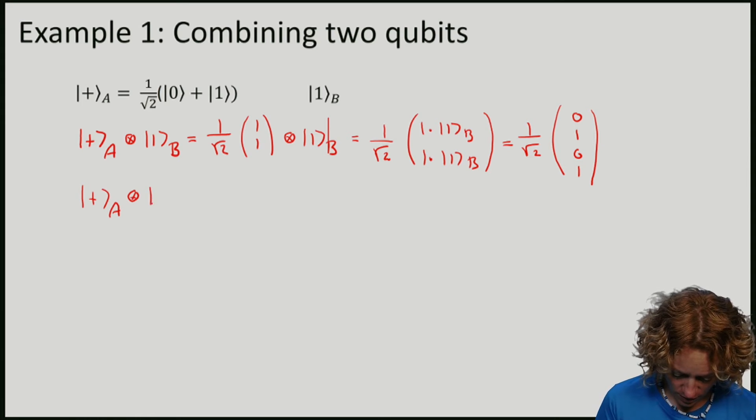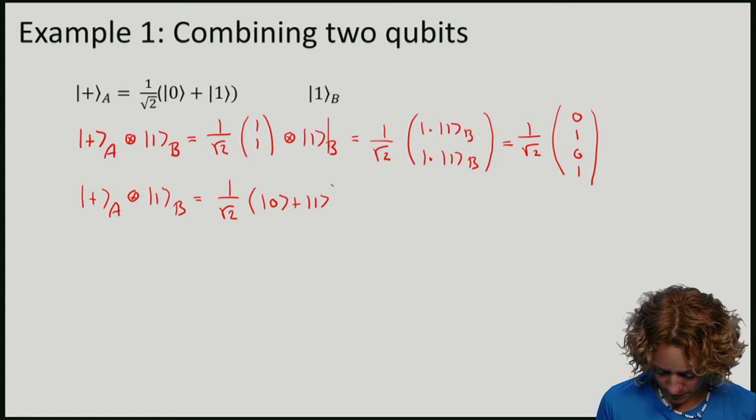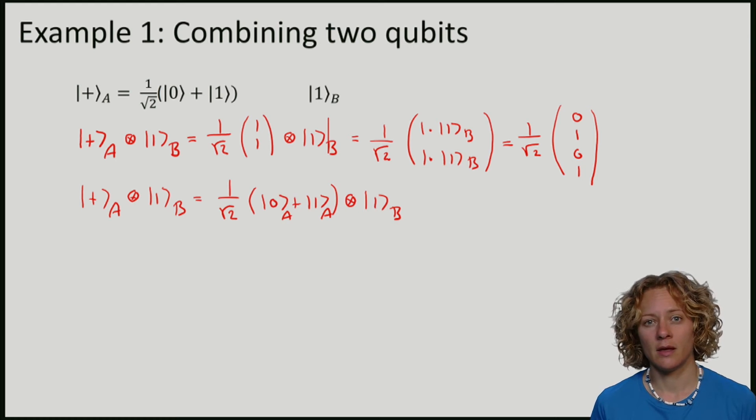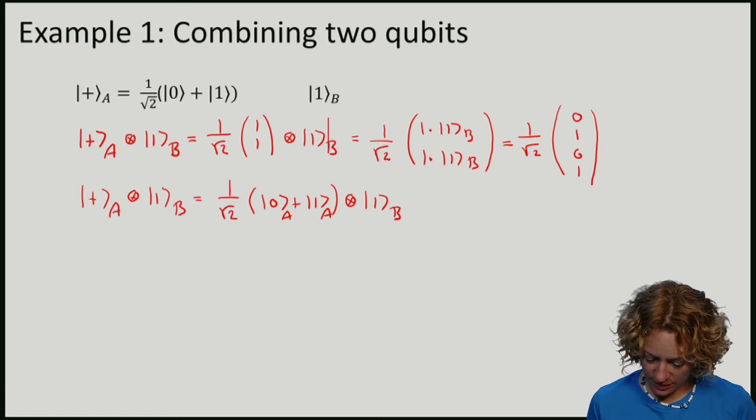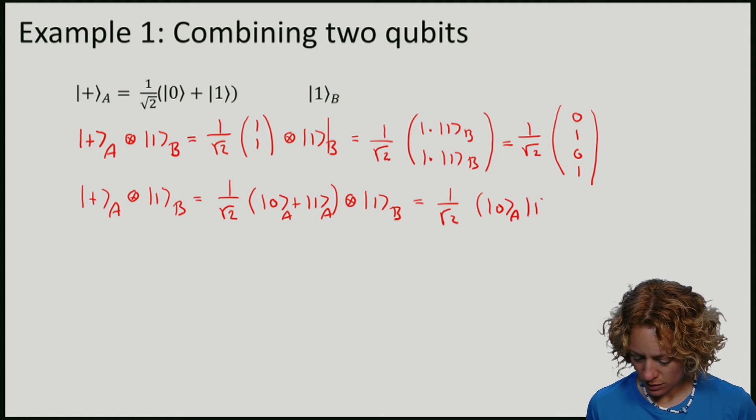What I will do is not apply the vector but just write out A plus. So we will have (|0⟩ + |1⟩) tensor on A, tensor |1⟩ on B. Using the fact that the tensor product is distributive, we get 1 over square root 2 times (|0⟩ on A, |1⟩ on B plus |1⟩ on A and |1⟩ on B).